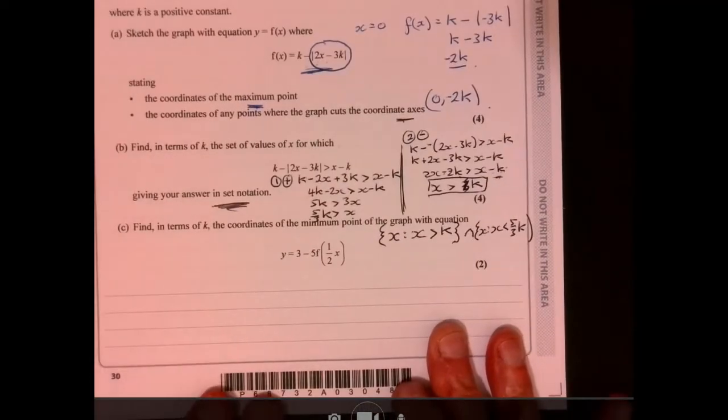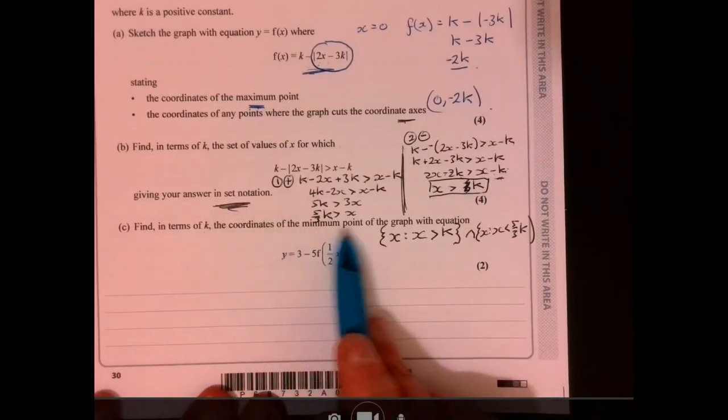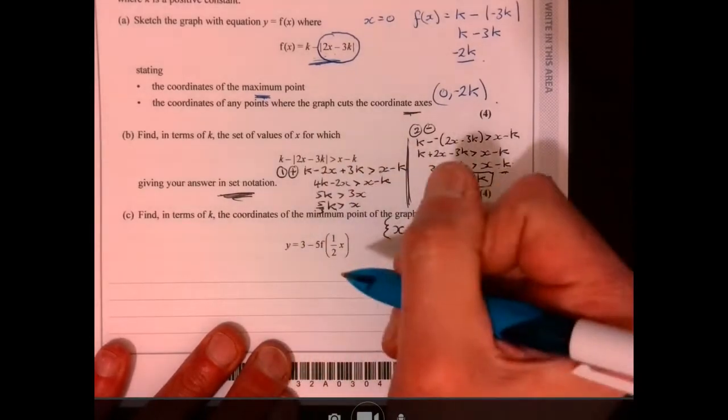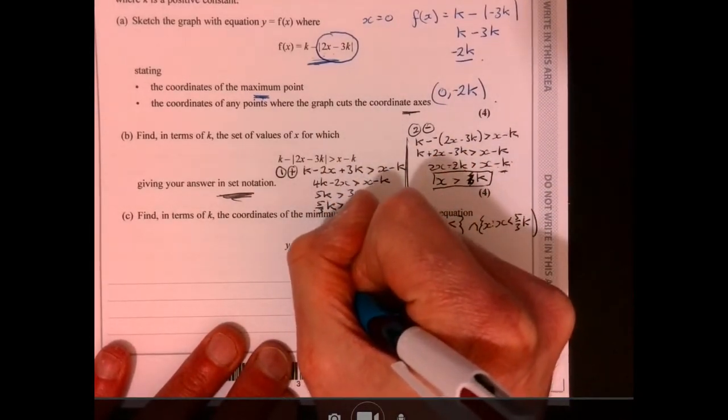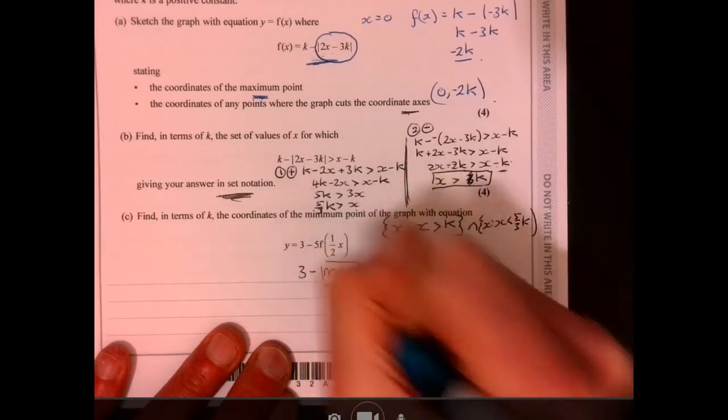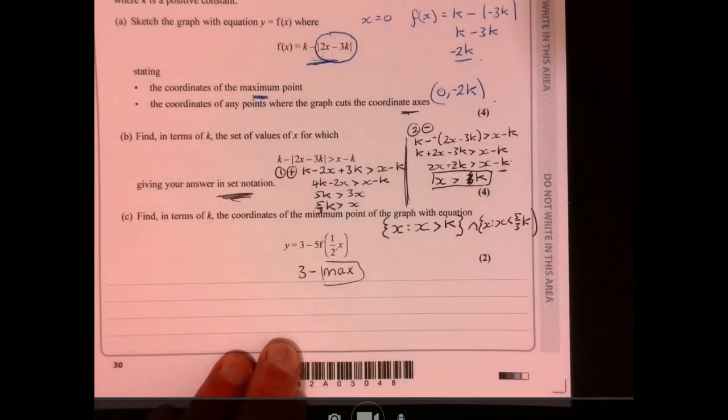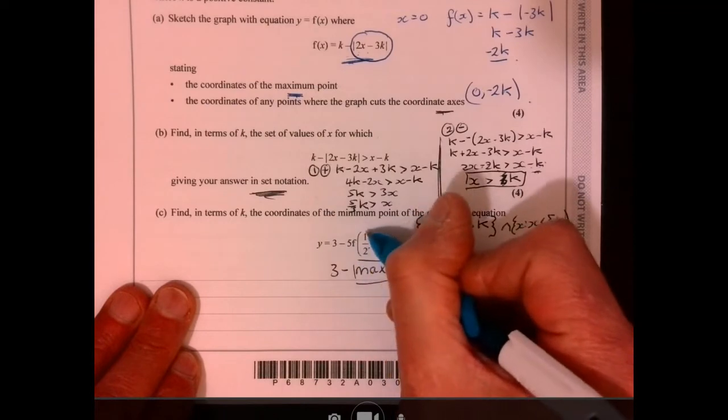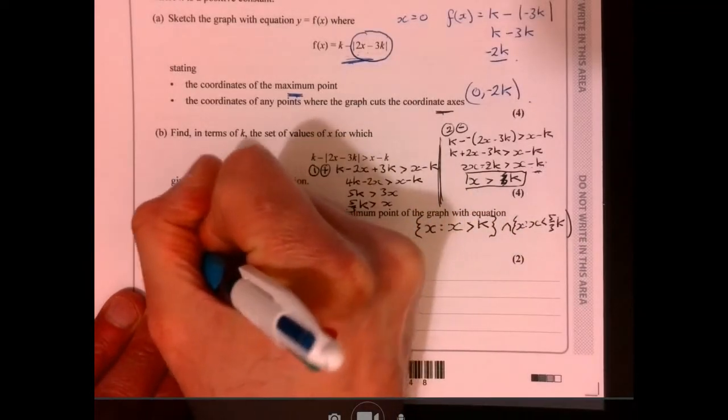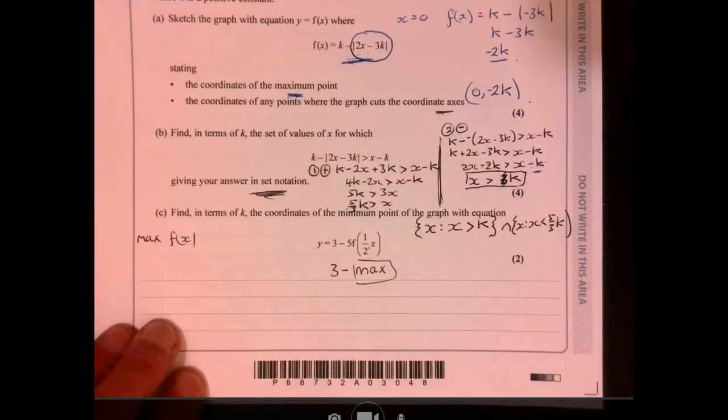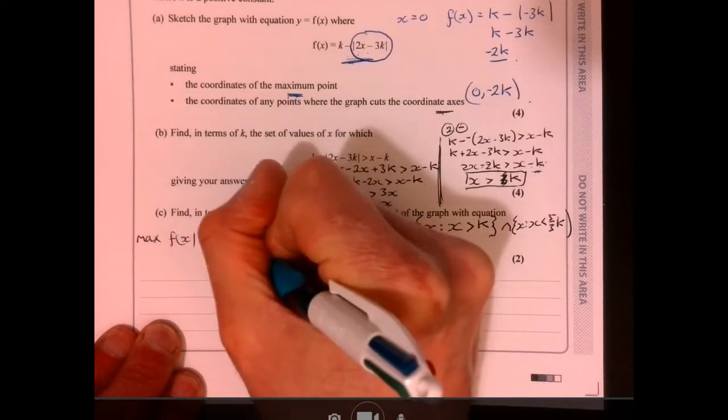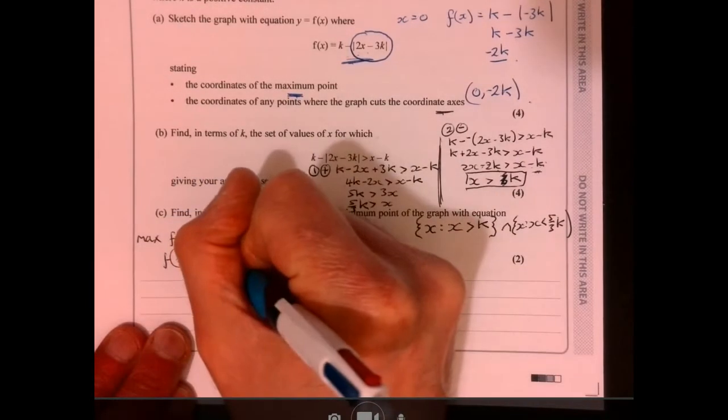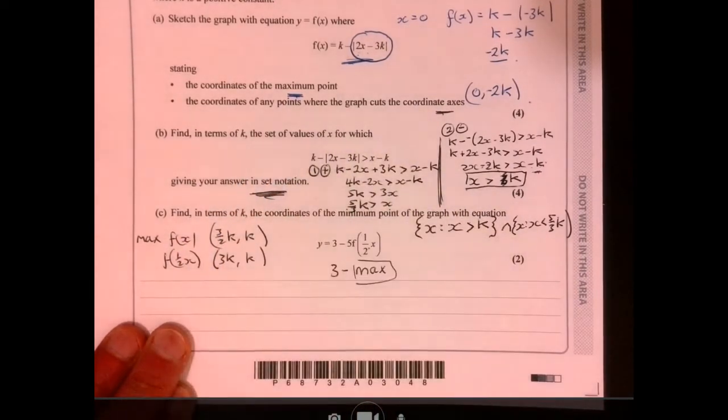Now, the last part of the question. Let's have a look at this. This part here. It said, find in terms of k the coordinates of the minimum point in the graph with this equation just here. So get the minimum point in the graph. What I want to be able to do is I've got to do three takeaway. We've got to get the maximum point here. Just there. Now, we know from before, so earlier on in the question, because we're looking at the function of half x. Well, we know that the max of the function of x was three over two k. So the max of half x, I'm going to have to think about this bit a little bit. It's always back to front what you think it would be. Y-value won't change.